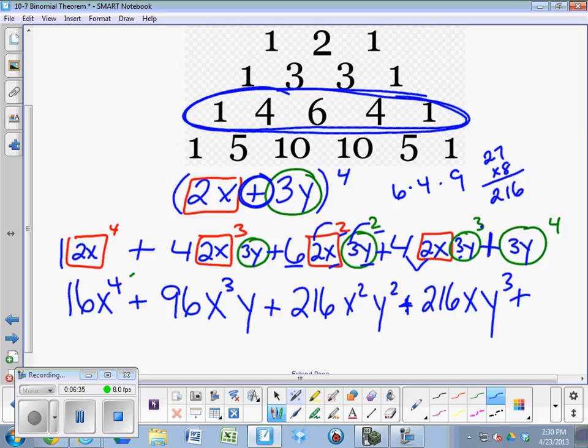Finally, after all that, the biggest mistake that I often see is writing 3y to the 4th. 81y to the 4th. If 3 is in the parentheses, it needs to be multiplied by itself. 3 times 3 times 3 times 3. 81y to the 4th. That's the binomial expansion of 2x plus 3y to the 4th.